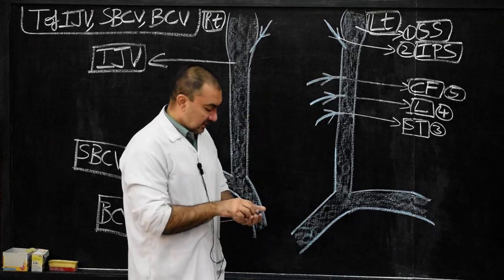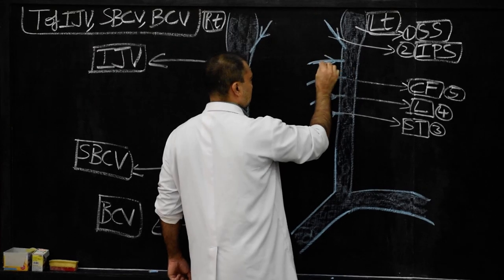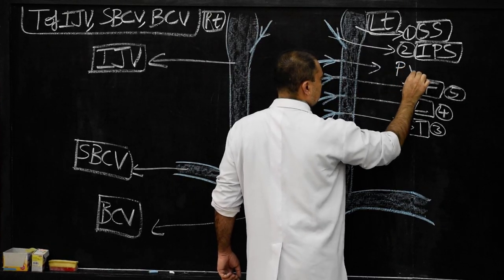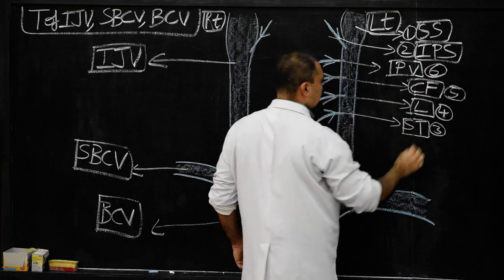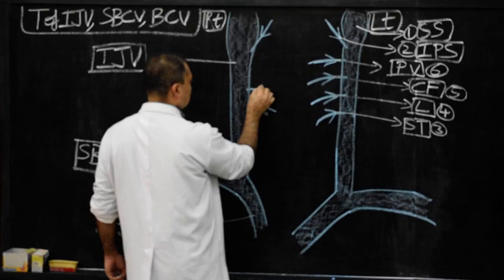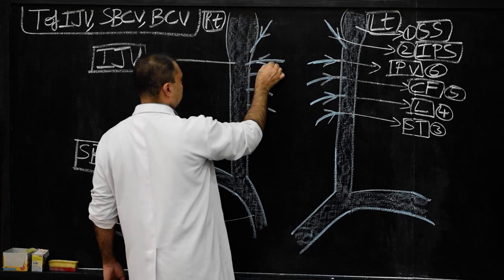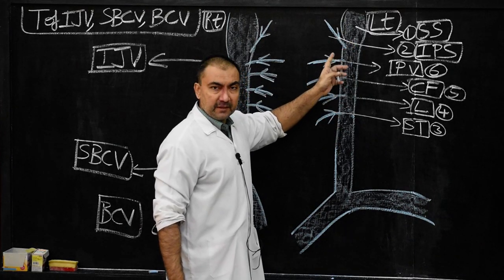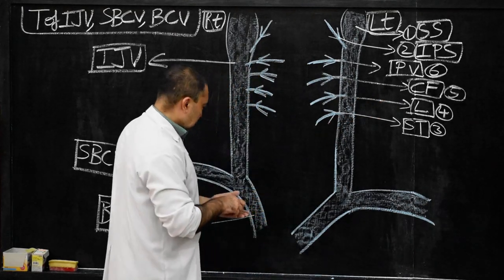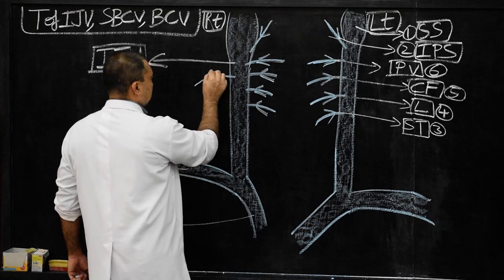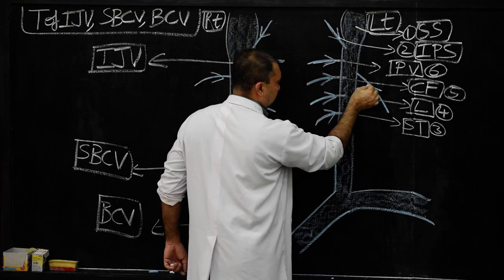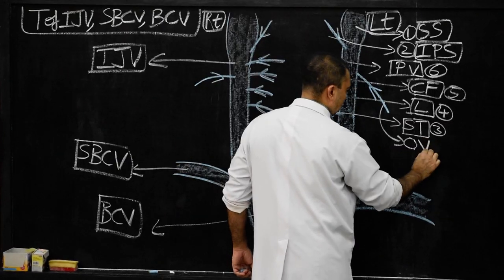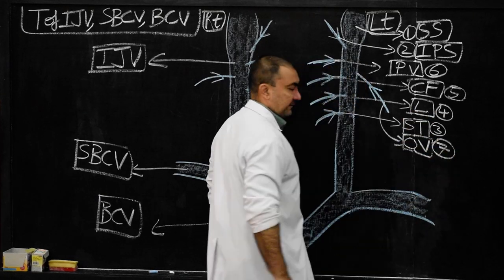These are lingual and common facial veins. Then we show pharyngeal vein — that is tributary number 6. Similarly on both sides: superior thyroid, lingual, common facial, and pharyngeal. So altogether: sigmoid sinus, inferior petrosal sinus, superior thyroid, lingual, common facial, and pharyngeal — total 6 tributaries. Then from the opposite side, the occipital vein is tributary number 7.